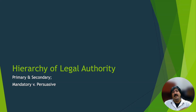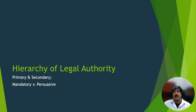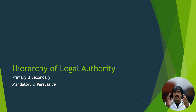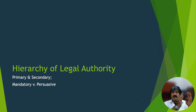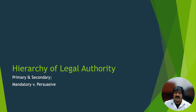So on to the meat of the matter: the hierarchy of legal authority. You can think about the hierarchy of legal authority as being broken down in two ways: primary and secondary authority, and then mandatory versus persuasive. Let's dive further into this topic.